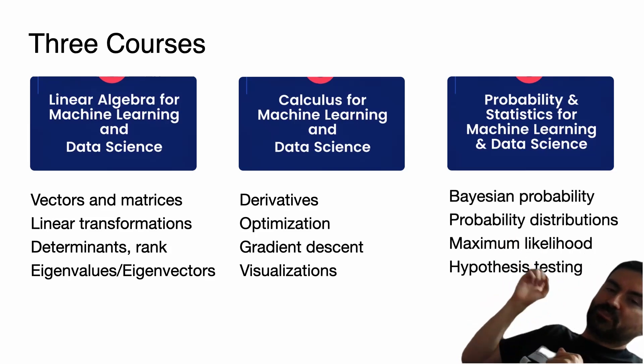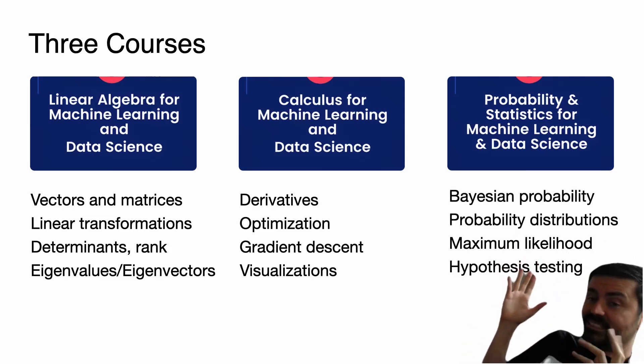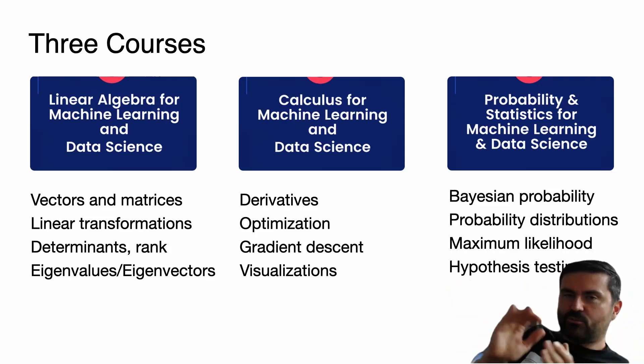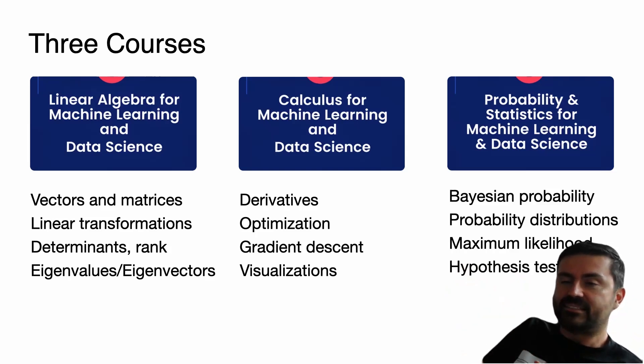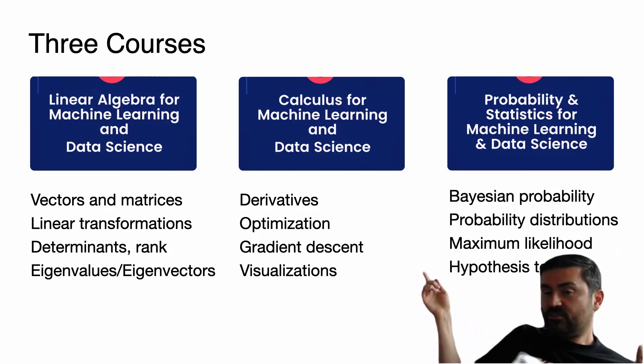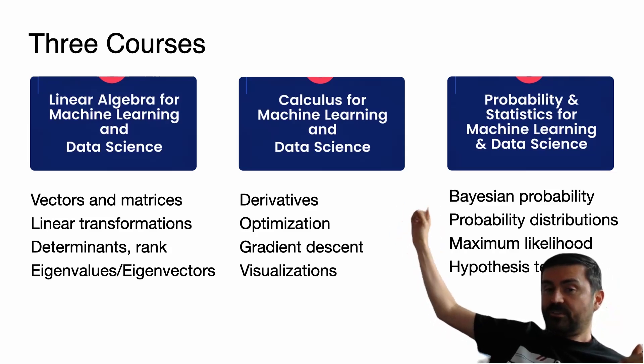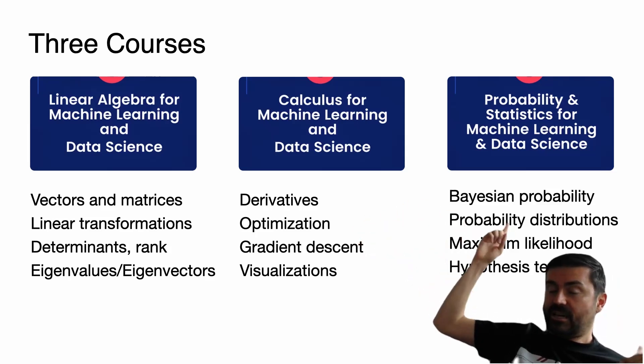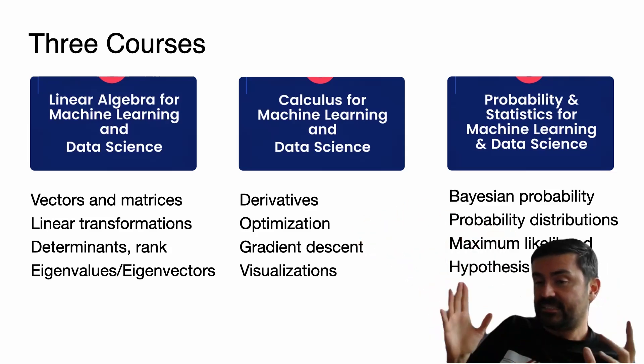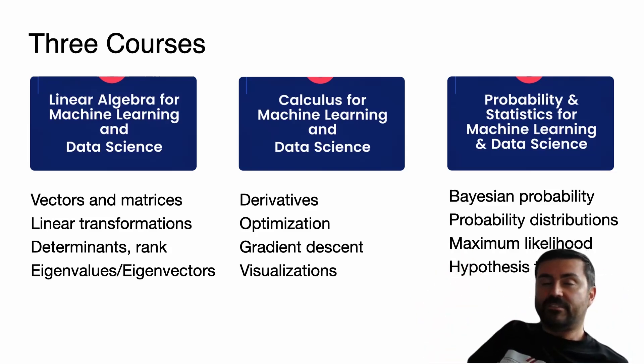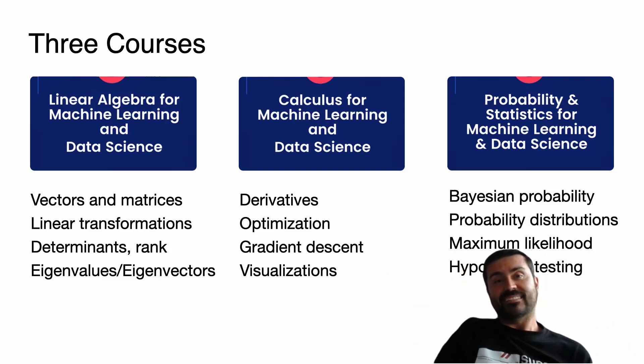And finally, in the third course we see Probability and Statistics. So you learn a lot of things - Bayesian probability, many probability distributions, and some statistics things like maximum likelihood, hypothesis testing, and of course a plethora of real-life examples where you can apply these things. So I definitely recommend you check out this course. This first video is a sampler of the calculus course. Pretty soon there will be videos of the linear algebra and the probability and statistics as samplers just like this one. The links for the specialization are in the comments of the video. So thank you for your attention and see you in the next video.